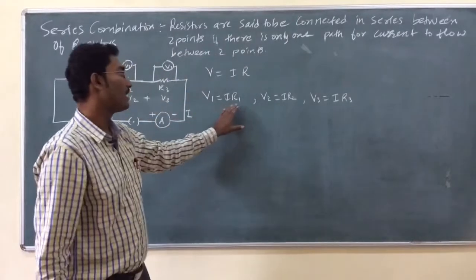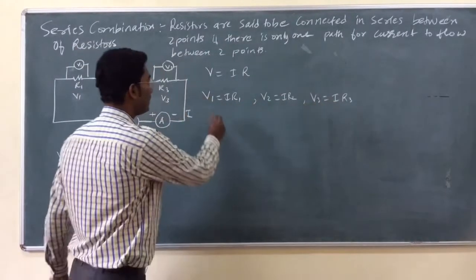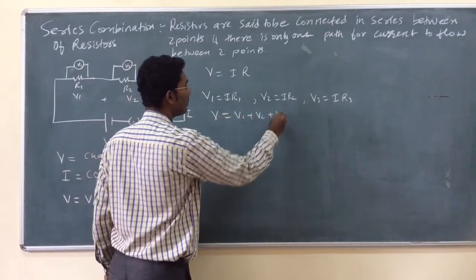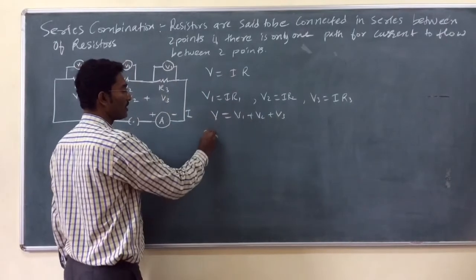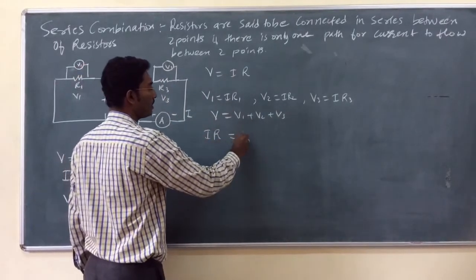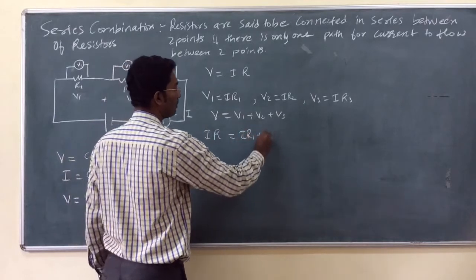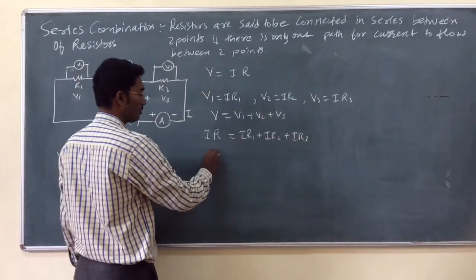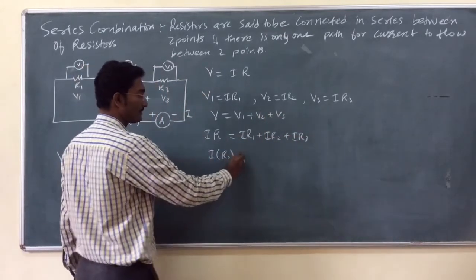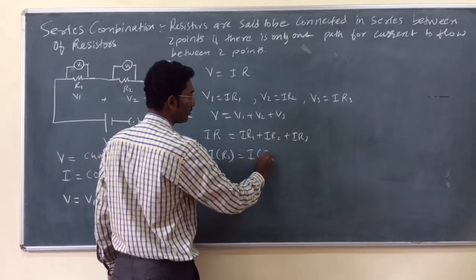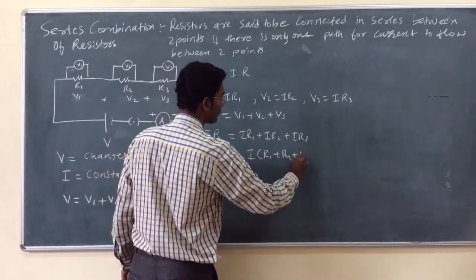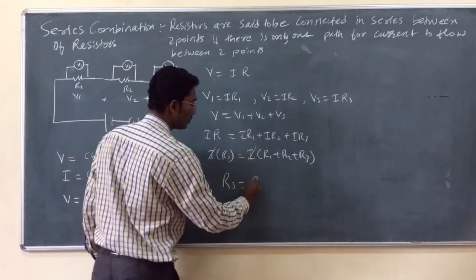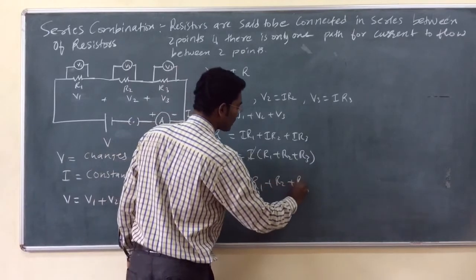So, V1 is equal to IR1, V2 is equal to IR2, V3 is equal to IR3, and we know that V is equal to V1 plus V2 plus V3. But V is IR, so: IR is equal to IR1 plus IR2 plus IR3. Since I is common, we cancel it out. Calling the series resistance RS, we get RS is equal to R1 plus R2 plus R3.